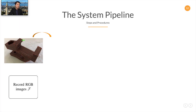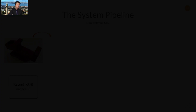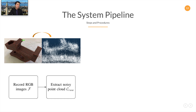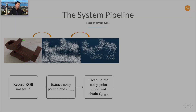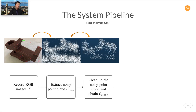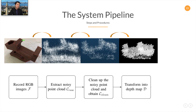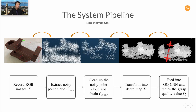Now let me introduce the system pipeline. First, we record RGB images using the iPhone. Then ARKit extracts noisy point clouds from a series of images. We then clean up the noisy point cloud, obtaining a cleaner point cloud. Then, using some predefined viewpoints, we project the clean 3D point clouds into depth maps. Finally, we feed the synthetic depth images into DexNet and plan grasps.